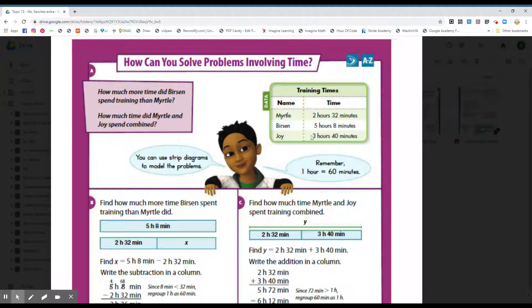Boys and girls, who's one that spent the most amount, please? If you said Burson, good job. Who's one that spent the least amount of time training? If you said Myrtle, good job. It says you can use strip diagrams to model the problems. Remember, one hour is equivalent to 60 minutes.